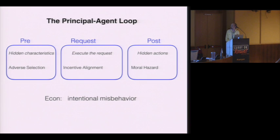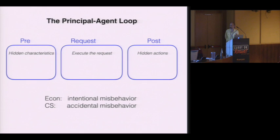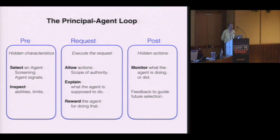In economics, the focus is on intentional misbehavior, which creates very particular hazards that arise from this lack of information. Computer science is mostly focused on accidental misbehavior — which is to say, bugs. So the particular hazards that arise from this lack of information are different, but the overall structure is just as useful for us as it is for them.